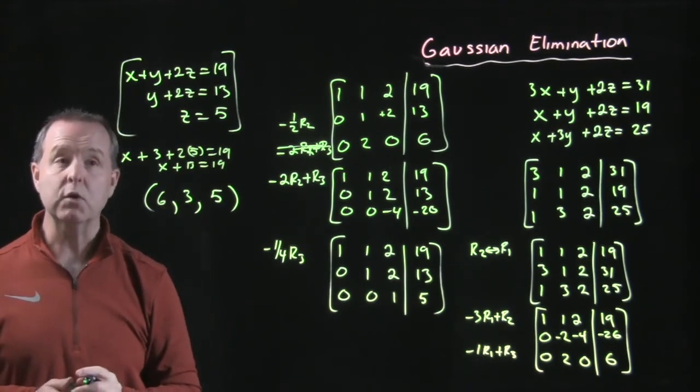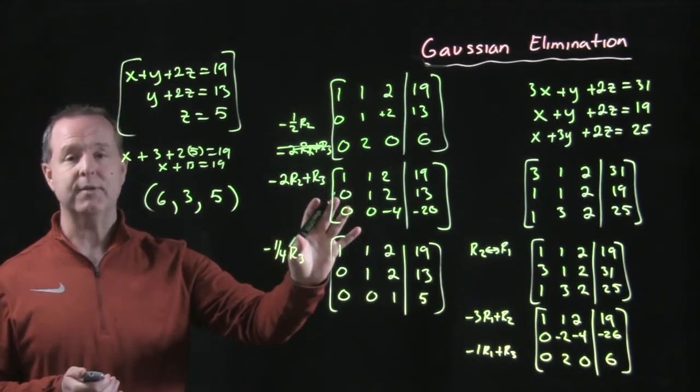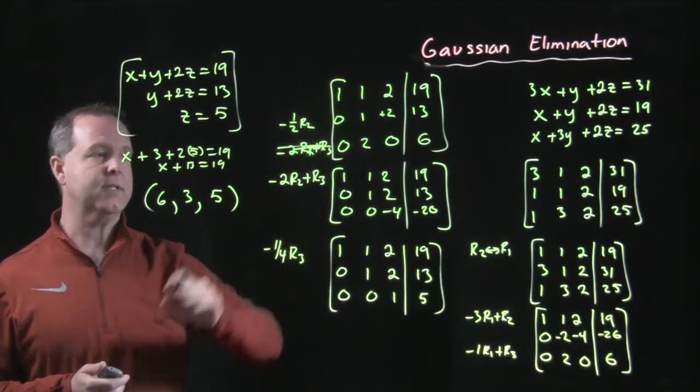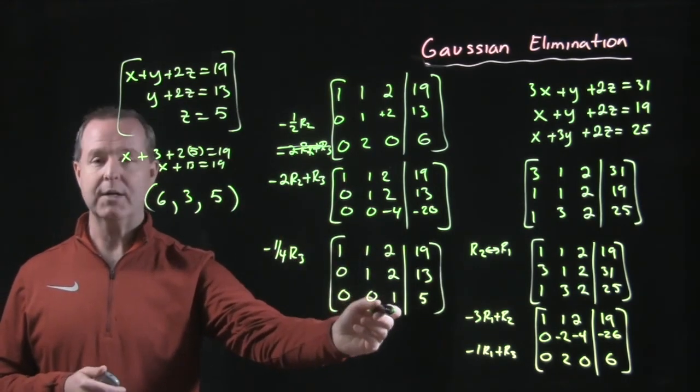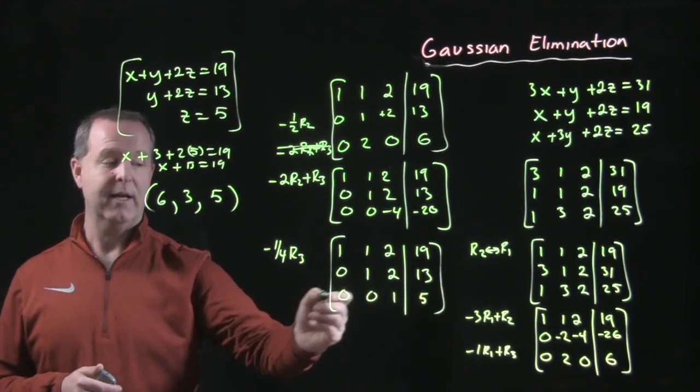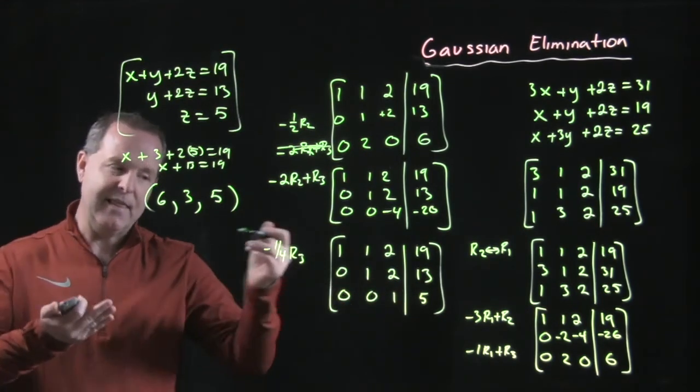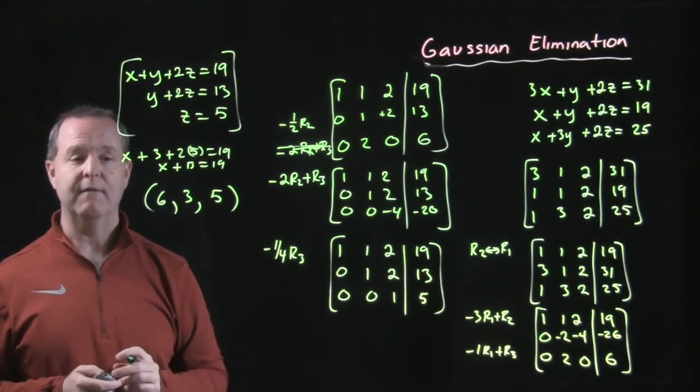So there's our solution to this original equation, (6, 3, 5), by just learning how to deal with matrices and use something we call Gaussian elimination to work through the process to get to this row echelon form. Ones on the diagonal, which means that our third row is already solved for the variable. And then from there, it's just backwards substituting to get to the other two variables that are unknown.